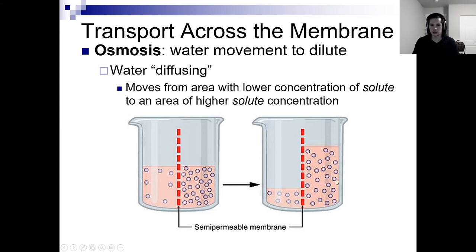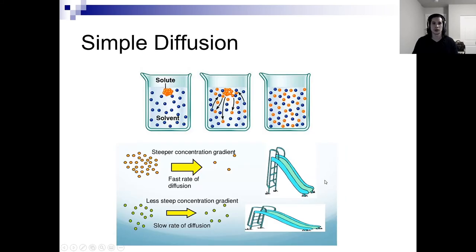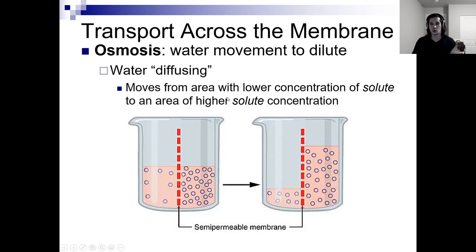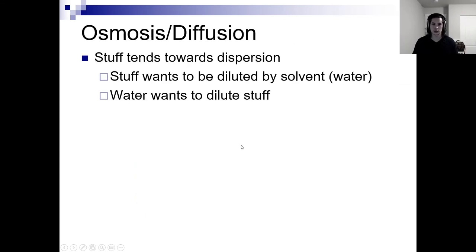This is diffusion — movement of solute. That's diffusion. The movement of water, we're talking about osmosis. As a general rule: stuff tends towards dispersion, stuff wants to be diluted by solvent, and water wants to dilute stuff.